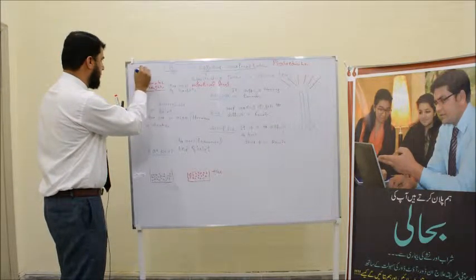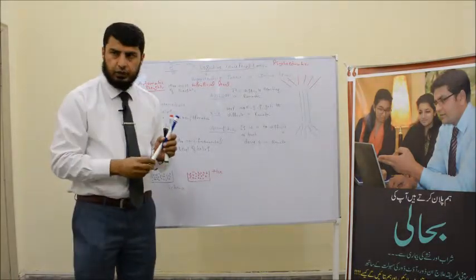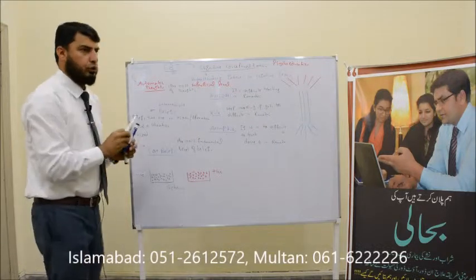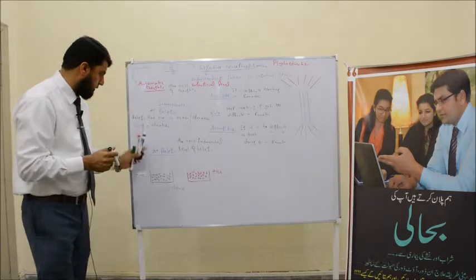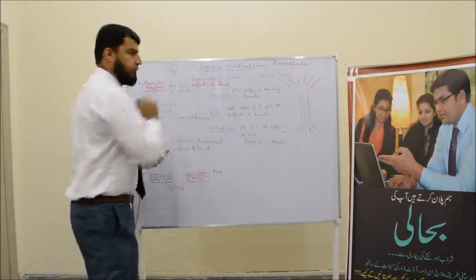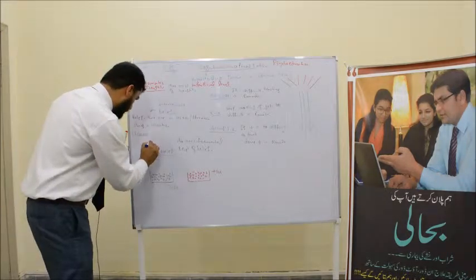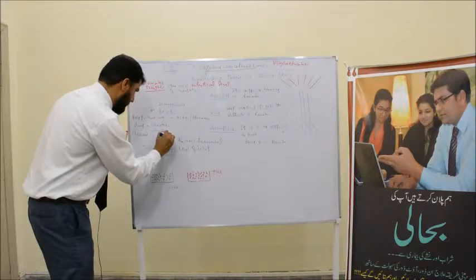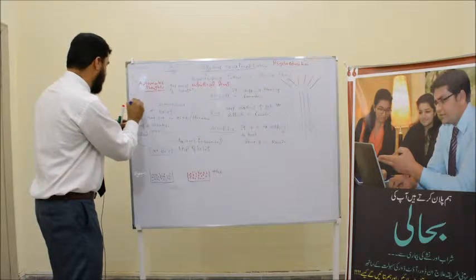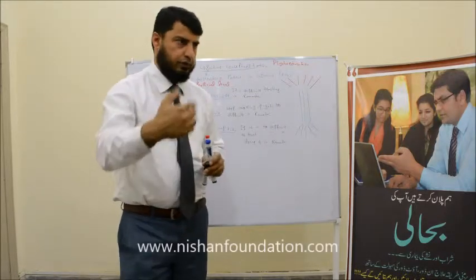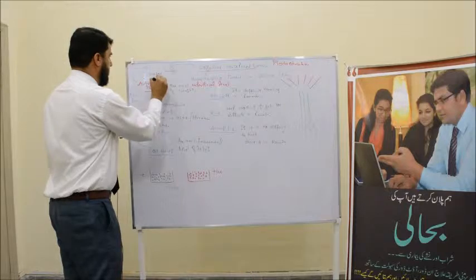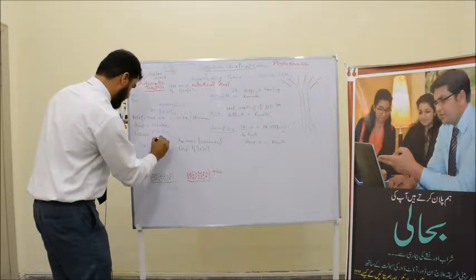Let's see a key difference. Core beliefs — what is their origin? The origin of core beliefs is childhood. And the origin of automatic thoughts is situation — they are situational, situation-specific. Core beliefs originate from childhood. Core beliefs are more fundamental, whereas automatic thoughts act at a superficial level. Third, core beliefs are more firmly held. Automatic thoughts are less firm. Fourth, core beliefs are longer lasting, while automatic thoughts are shorter lasting.